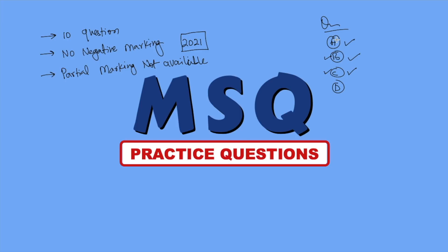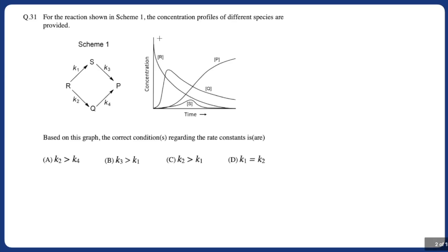Now I'm going to take some questions and show you how you can approach and solve them. It will be done just like any MCQ question — the key thing is that you have to make sure you are marking all the correct answers. Let's take the first question. It says: for the reaction shown in scheme one, the concentration profile of the different species is provided.